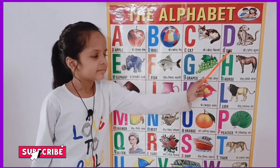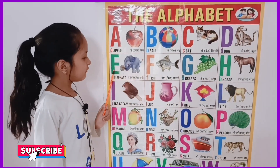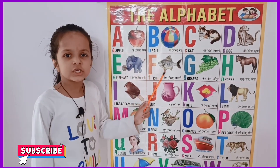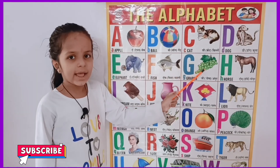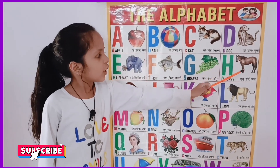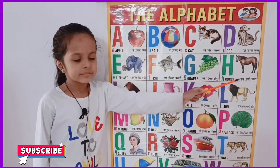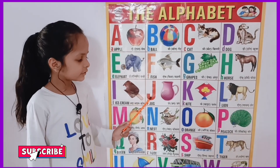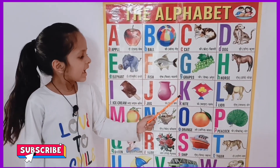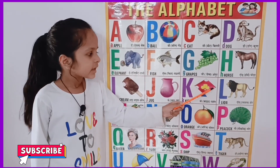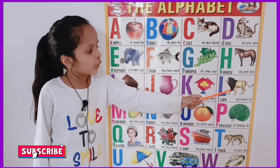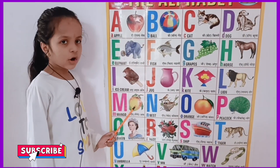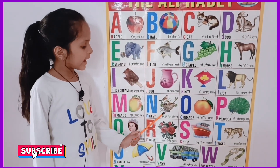D for dog, E for elephant, F for fish, G for grass, H for horse, I for ice cream, J for jar, K for kite, L for lion, M for mango, N for nest.